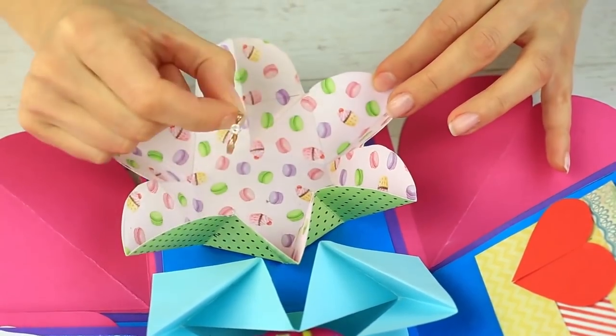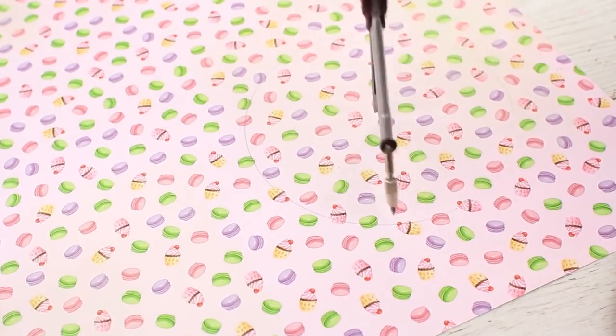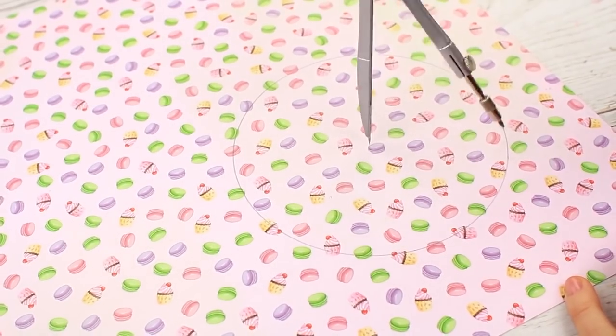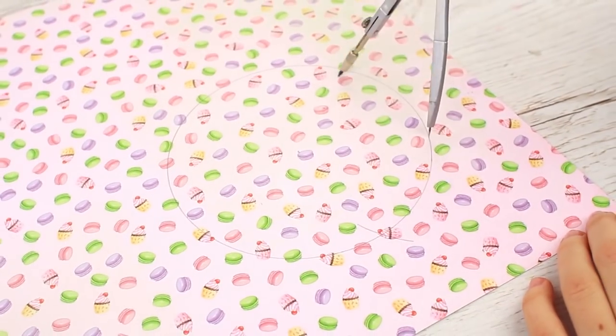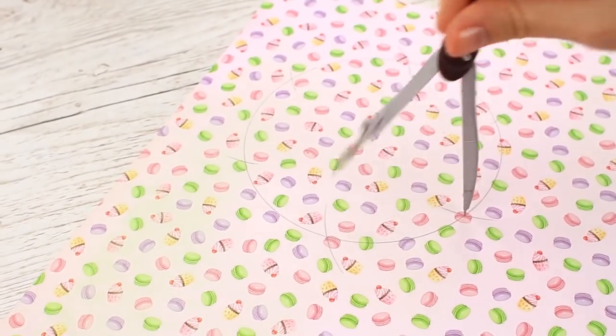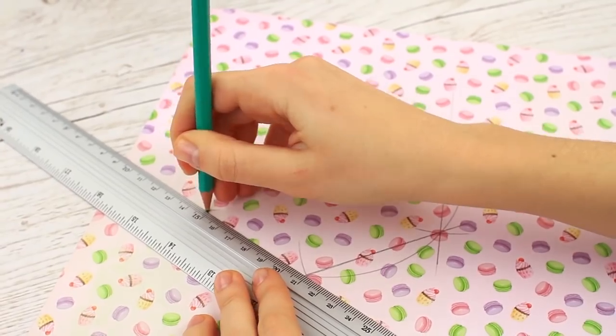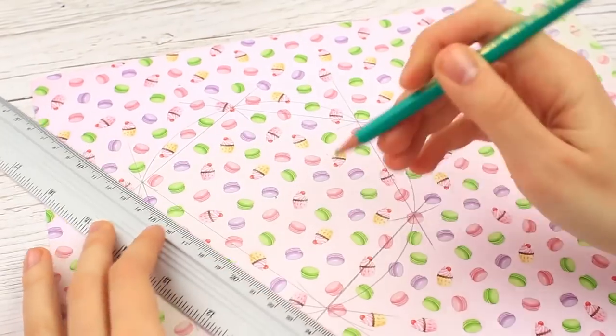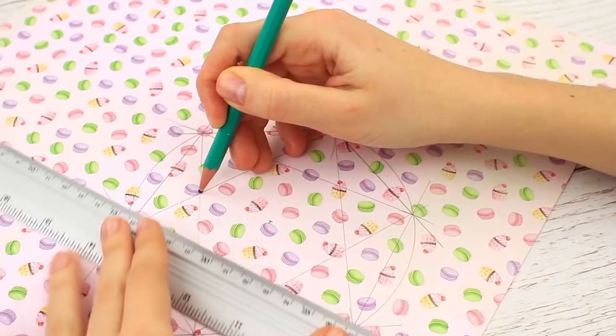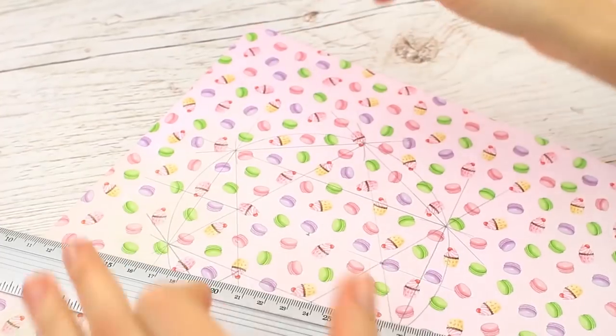Let's fold another small origami box. Draw a circle with a pair of compasses. The diameter should not exceed 4 inches. Divide the circle into 6 equal 2 inch parts. Connect the marks. You'll get an equilateral hexagon. Draw the lines this way to get triangles. We've got a 6-point star.